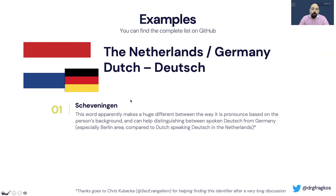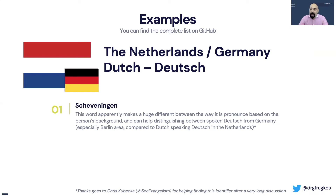Moving on to a very special example. Apparently this word makes a huge difference based on the person's background, and can even help distinguish between spoken Deutsch from Germany — especially the Berlin area — compared to Dutch-speaking Deutsch in the Netherlands. I know it can get a little bit confusing. A shout out to Chris Kubeka for helping me identifying this word. It is very difficult for me to say it, and I don't want to even attempt to say it, but this is a great example as far as I know based on the tests we've done.